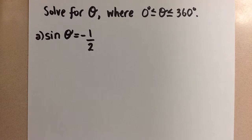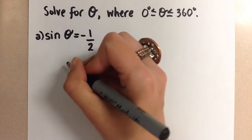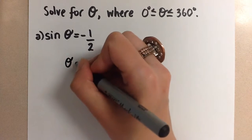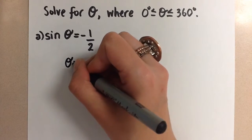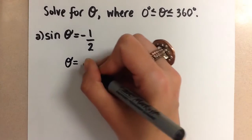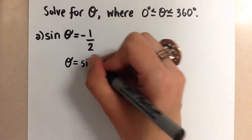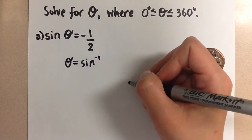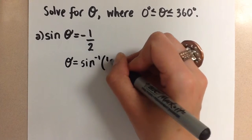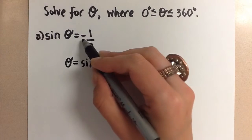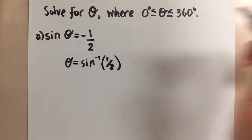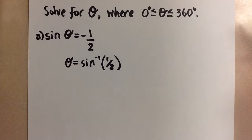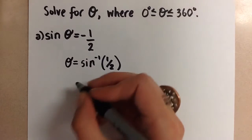So the first thing that we want to do is use your calculator to solve for the value of theta using the inverse function. So we're going to do the inverse sine of 1 over 2 and we can ignore that negative now because we're just going to use that to tell us which quadrant to draw our related acute angle in and we don't have to put it into our inverse function here.